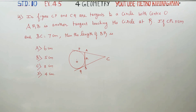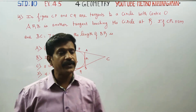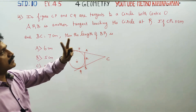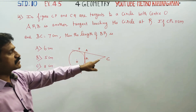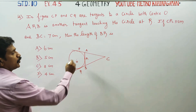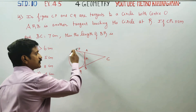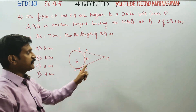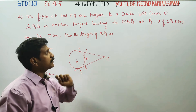Dear 10th standard students, I am Etro Karanagaran. In exercise number 4.5, sum number 14, in the figure, CP and CQ are the tangents to the circle with the center O. CP and CQ are the tangents drawn from an external point.